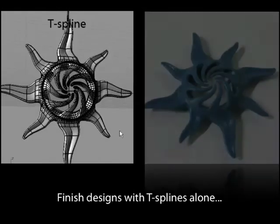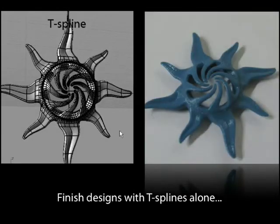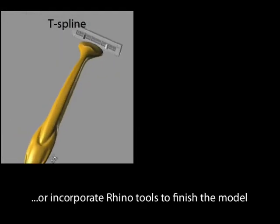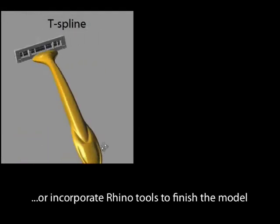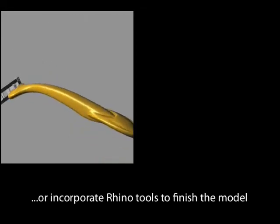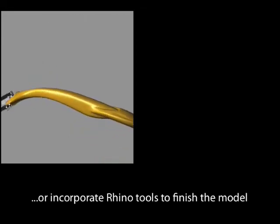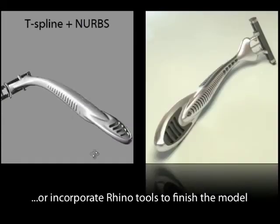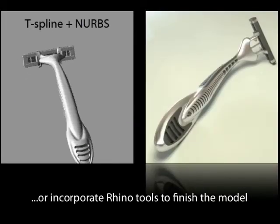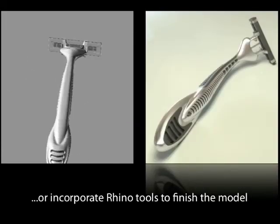T-Splines can be manufactured by any process that uses NURBS or STL meshes. You can also use T-Splines to create the main form of the model. Because T-Splines is fully integrated into Rhino, you can then leverage Rhino tools, such as bosses, ribs, and fillets, to add detailing and mechanical parts.